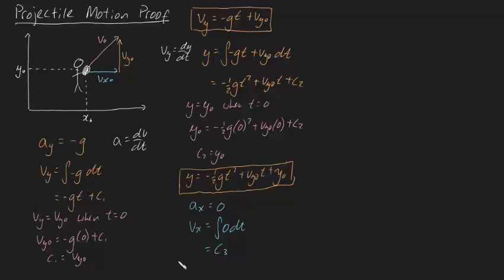And then we can find the integrational constant by using initial conditions again. We know, and you're probably getting good at this, we know that vx is equal to vx0, that's the initial velocity in the x direction, when t is equal to zero. And this is a pretty easy substitution, because there's not even a t to substitute.